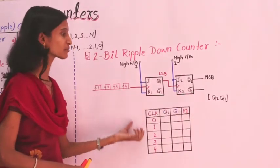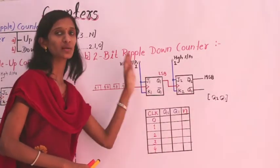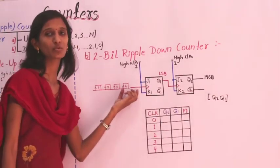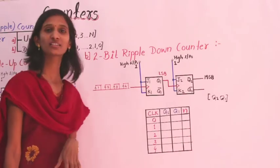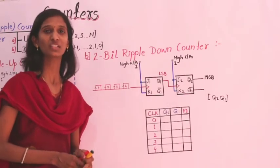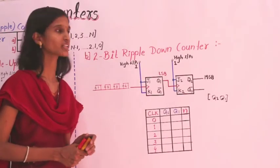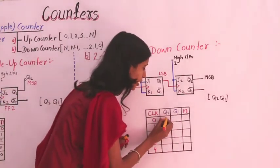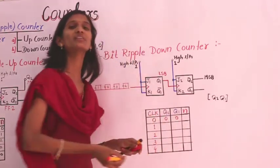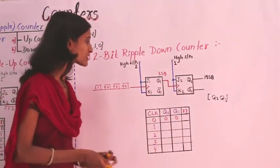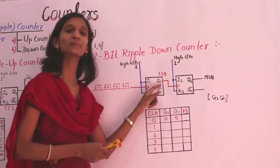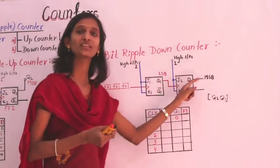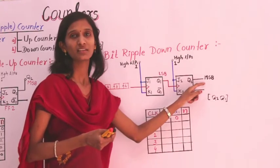Now let's see how it actually works. These are the two flip-flops with J and K inputs set to high. First, consider the initial condition where the clock is absent — not connected to the system. In this case, the outputs Q2 and Q1 are both 0.